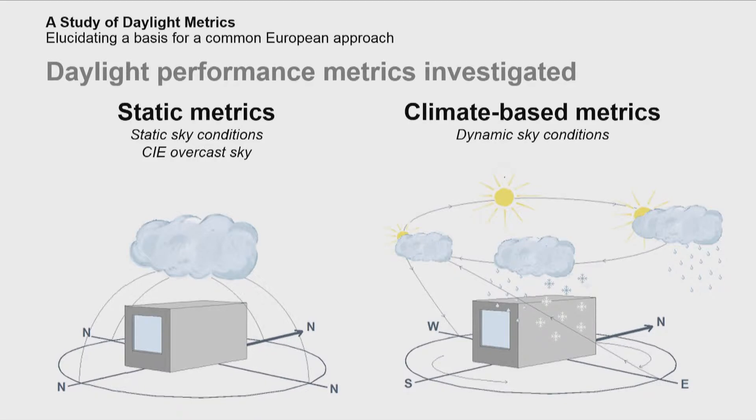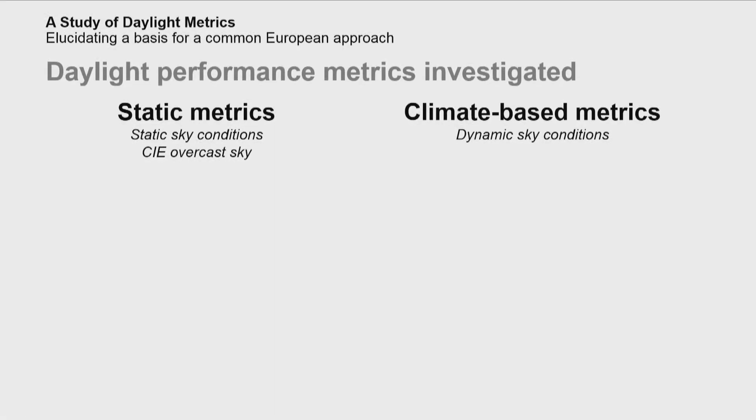This can create some problems when calculating it and also in real cases, especially in southern countries where there is a really high amount of direct sunlight and passive solar gain. On the other hand, climate-based daylight performance metrics are based on dynamic sky conditions, and thereby take orientation, location, and different weather conditions into account. In this study, we investigated different climate-based daylight performance metrics and compared the sensitivity of those to the static daylight factor.